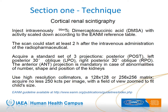The injected activity must be scaled down according to EANM guidelines. The acquisition requires a standard set of three projections: the posterior view and two posterior oblique at 30 to 35 degrees. Acquisition must be done with the child supine on the gamma camera. The child will have to stand still for about 30 minutes, so some immobilizing device and entertainment will help. The anterior projection is mandatory in case of abnormalities of number, shape, and position, especially for correctly calculating the split renal function.